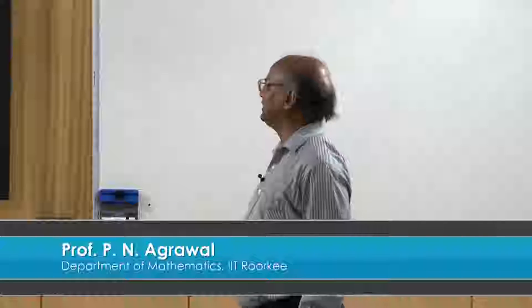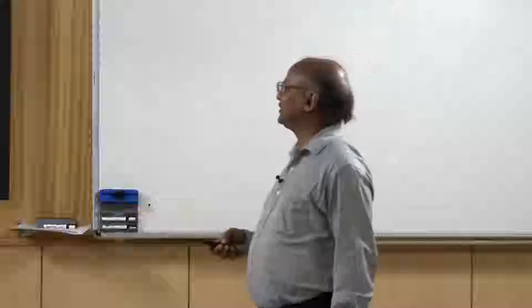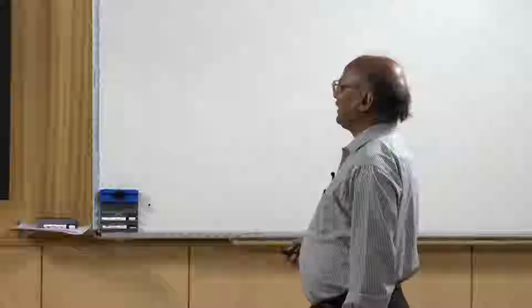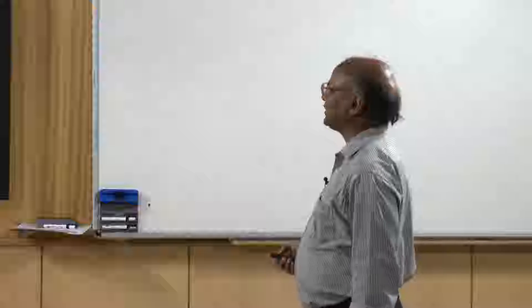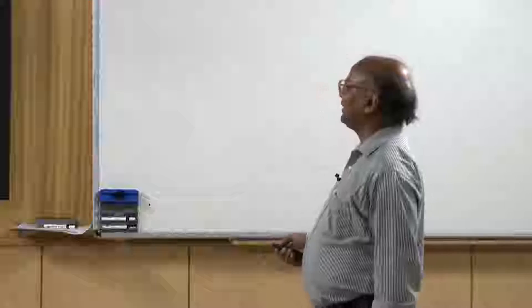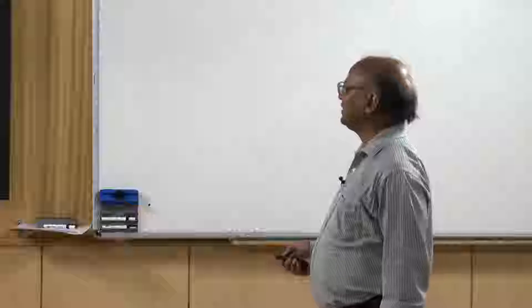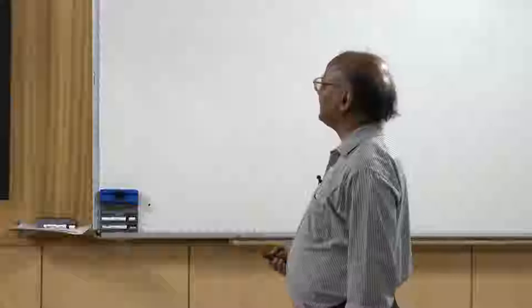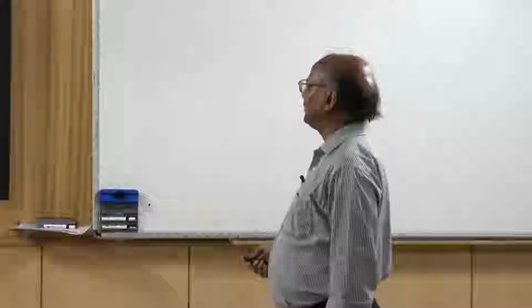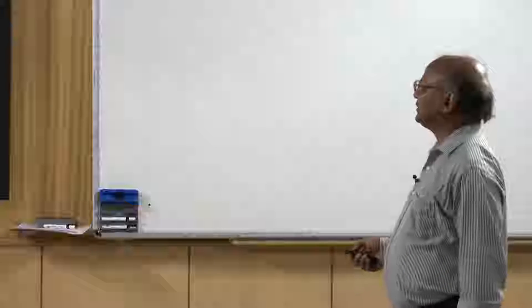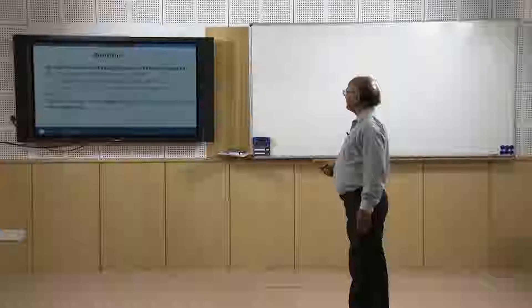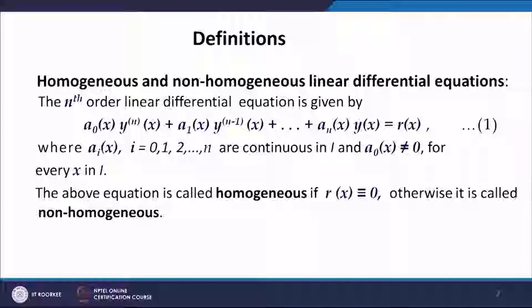First of all, we will define what we mean by homogeneous and non-homogeneous linear differential equations. The nth order linear differential equation is given by a₀(x)·yₙ(x) + a₁(x)·yₙ₋₁(x) + ... + aₙ(x)·y(x) = R(x), where aᵢ(x) for i = 0,1,...,n are continuous functions on an interval I, and the leading coefficient a₀(x) is assumed to be non-zero for every x in I. This equation will be called a homogeneous linear differential equation provided R(x) is identically 0; otherwise it will be called a non-homogeneous linear differential equation.